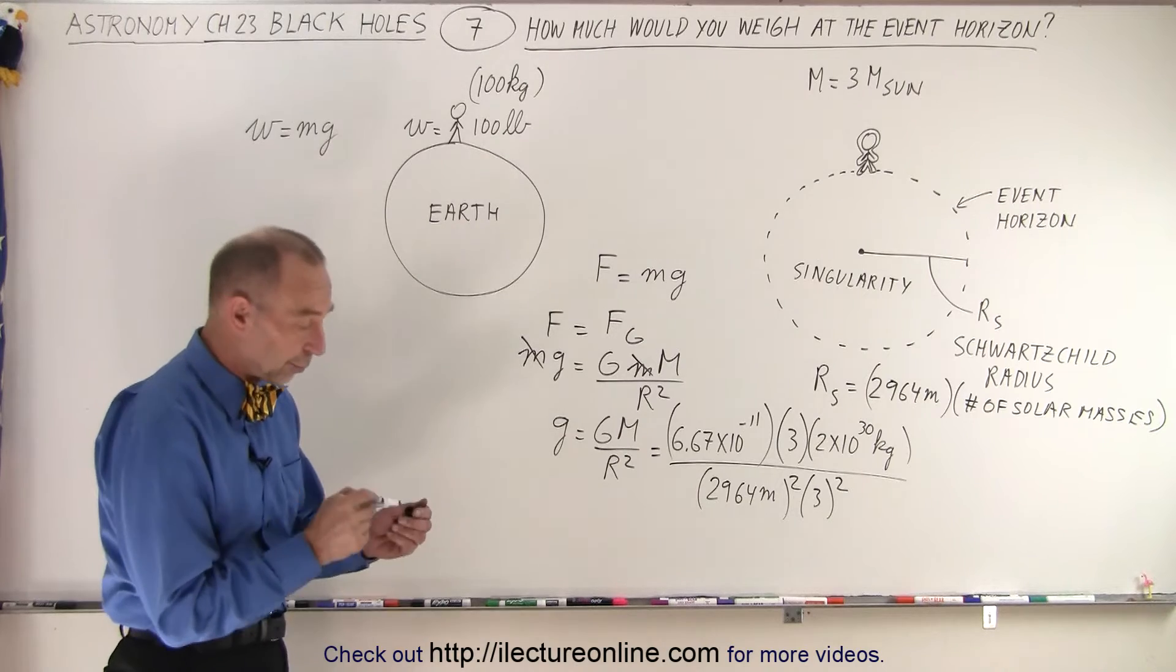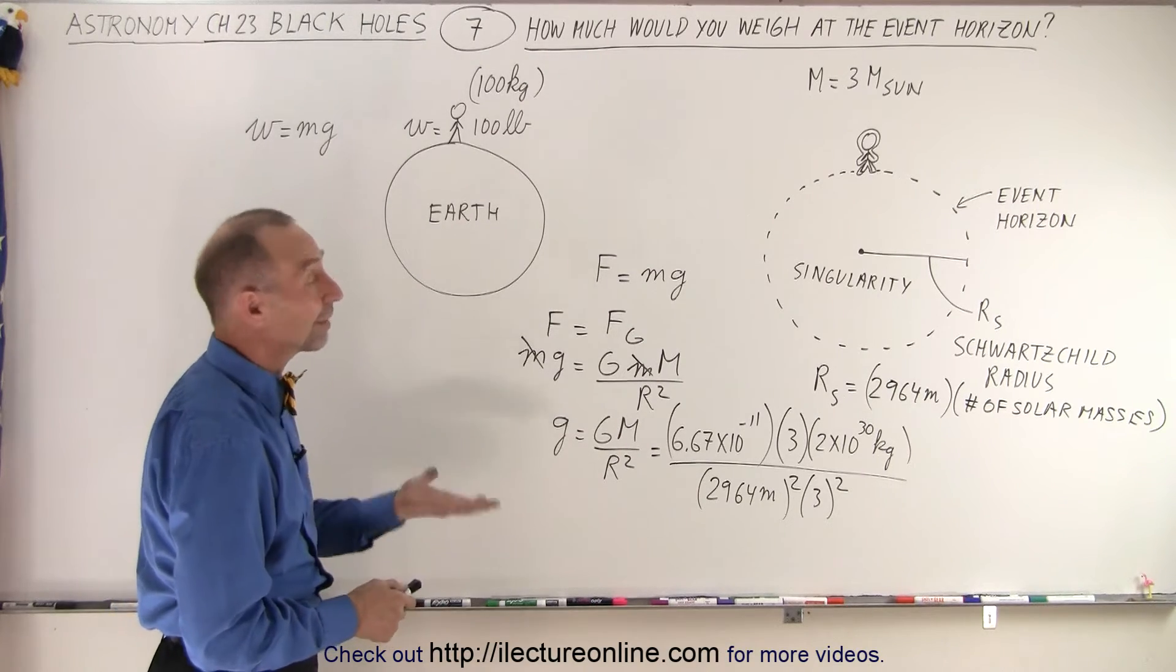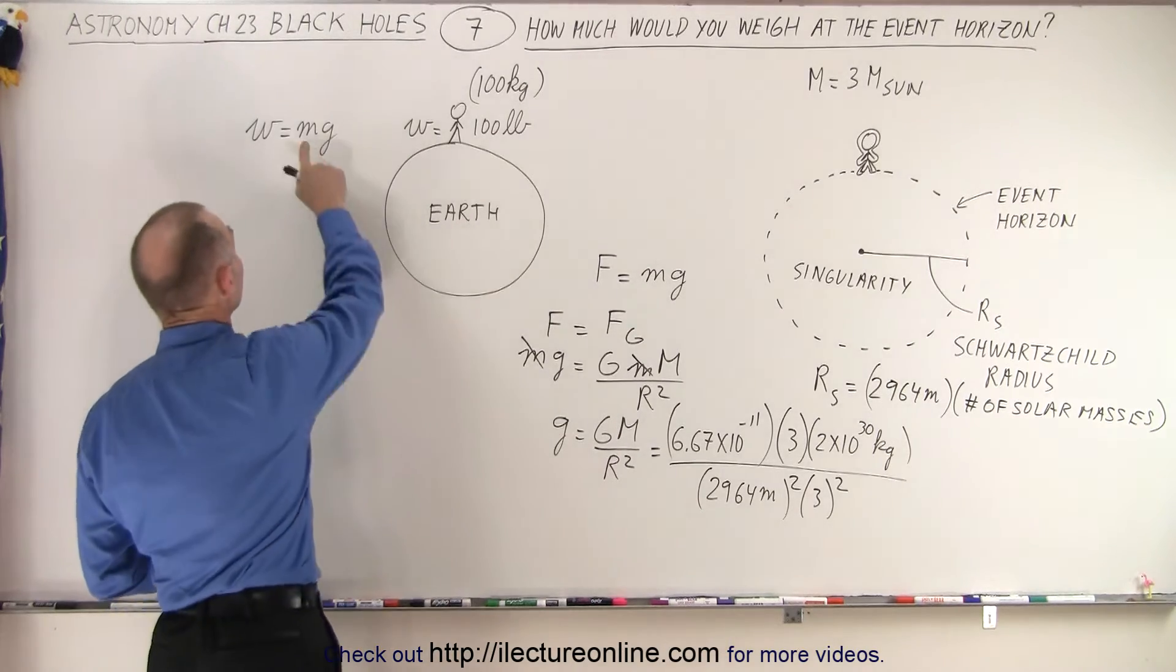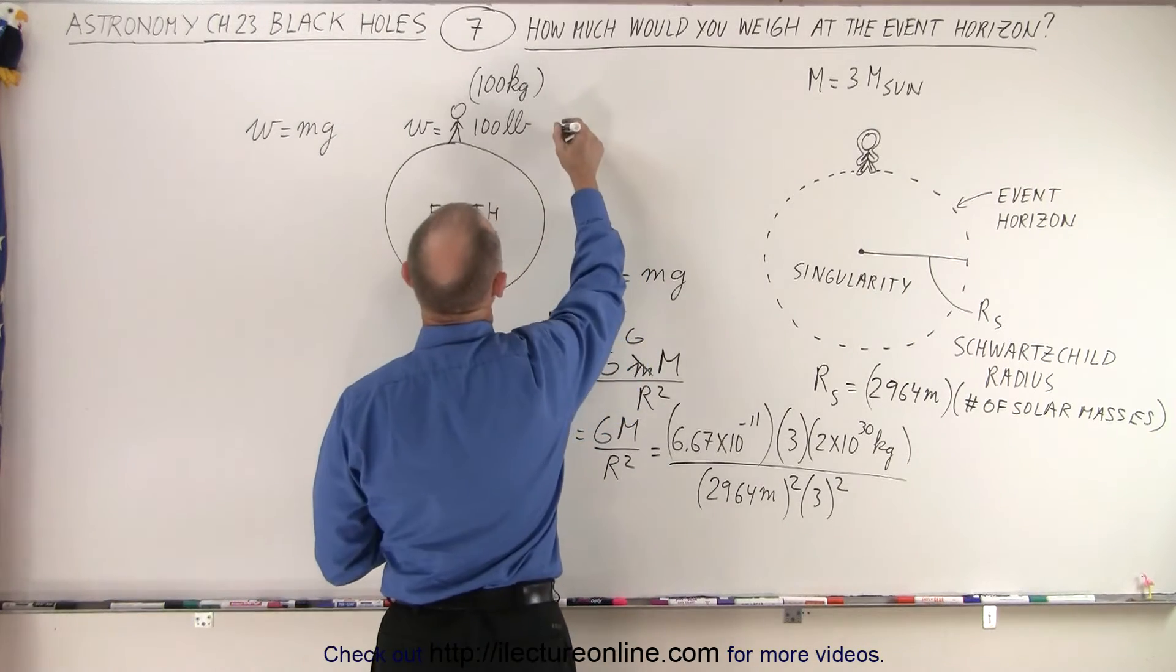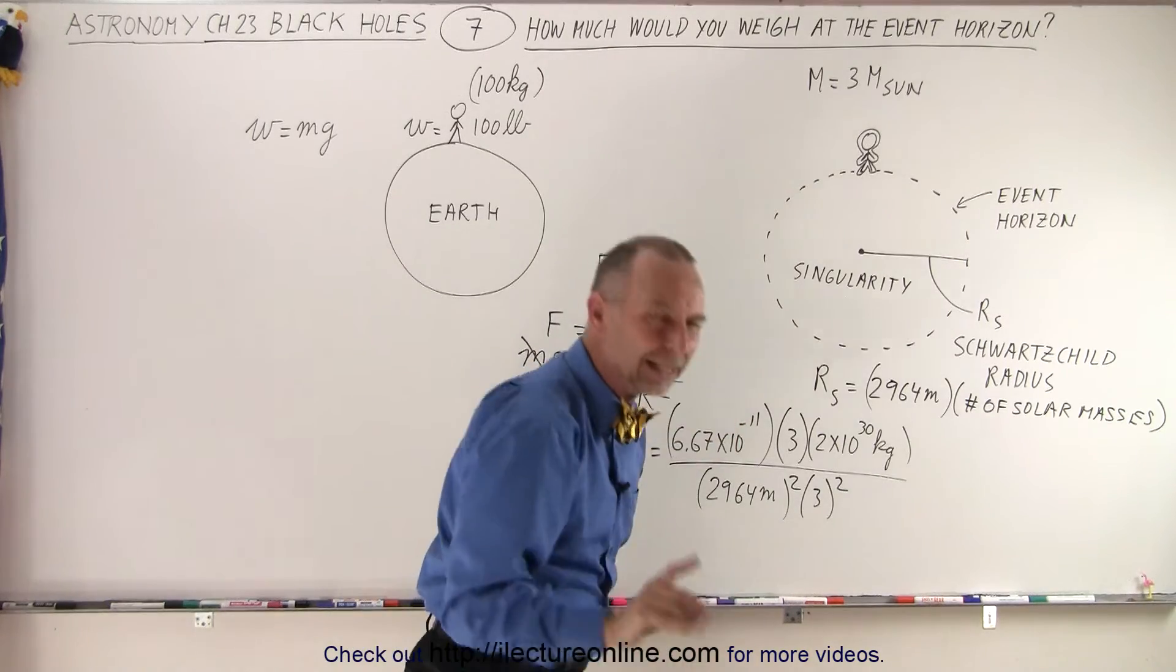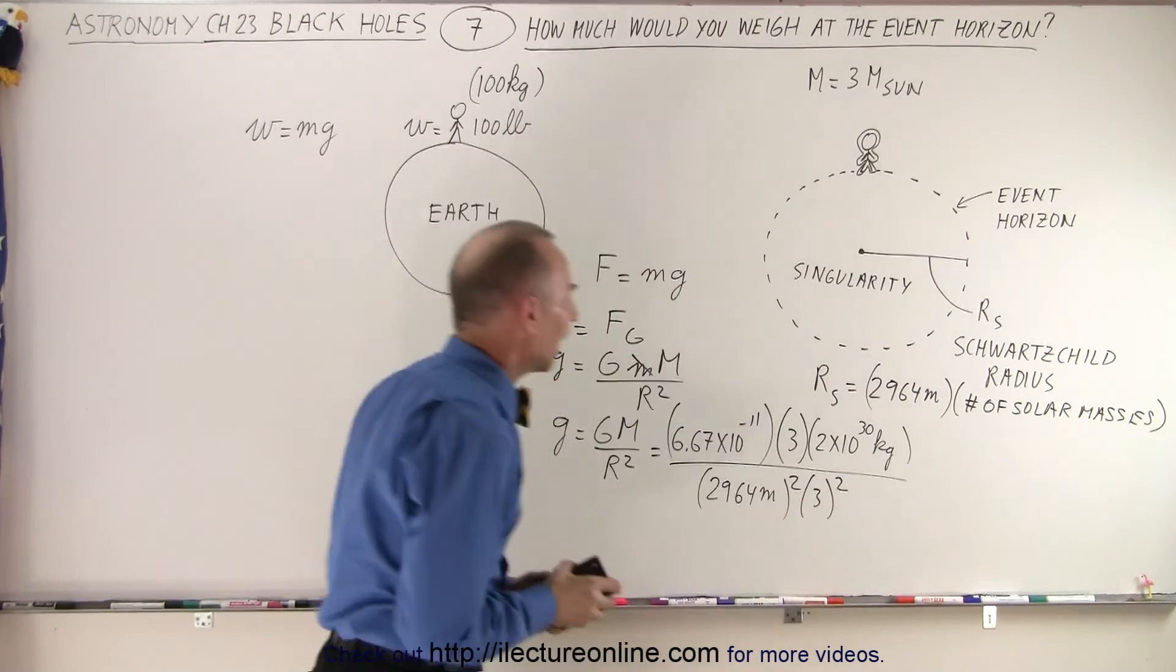All right, that will give us the acceleration due to gravity, and then to find our weight, we simply have to multiply it times our mass. So essentially, notice that this is going to be equal to, well, I'll show you in just a moment how we're going to do that.